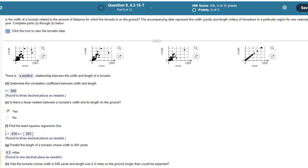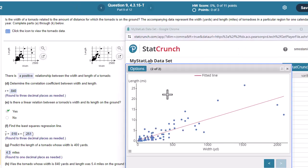So was the tornado whose width is 840 yards and length 5.4 miles on the ground longer than would be expected? So this one's a little tricky. We need to find 840. How about this one? There's 840. So is this tornado here, and I can take it and highlight it if I need to just so I can focus on it. Is that on the ground longer than expected? So what was it predicted? So the predicted amount would have been this value right here. So it was predicted to be on the ground a little bit longer. If I'm looking here, it looks like that prediction would be right here. But it was actually on the ground a little bit less than that.